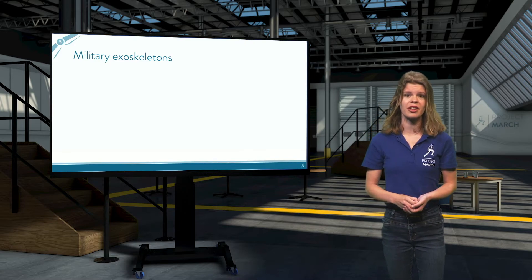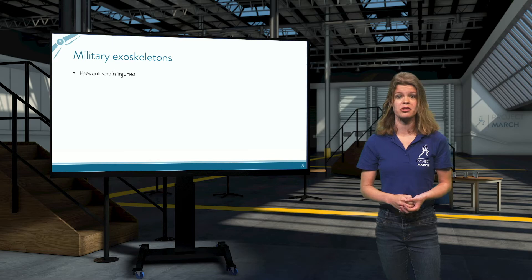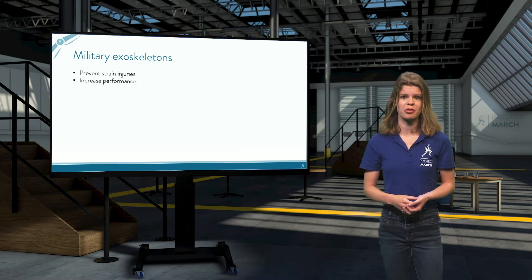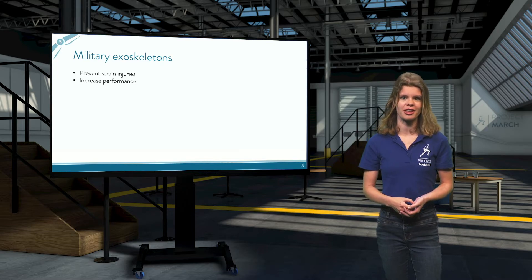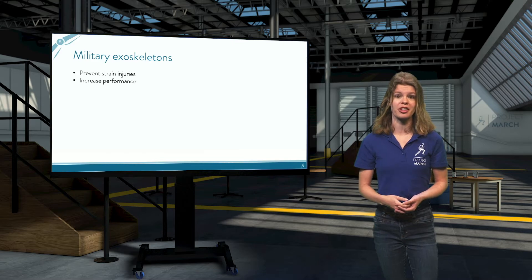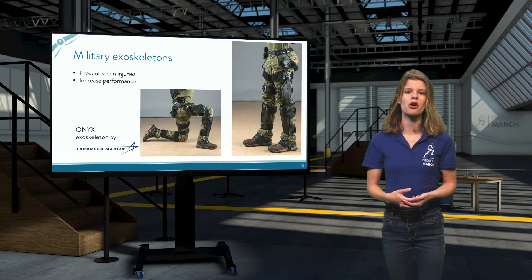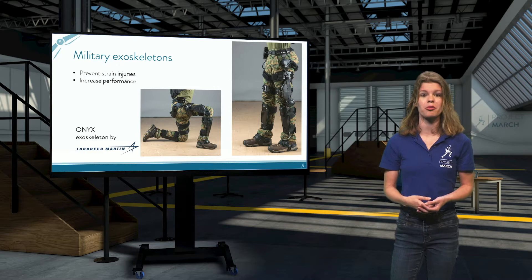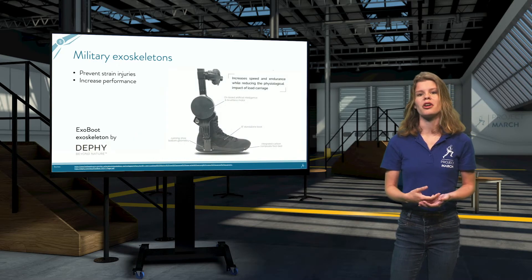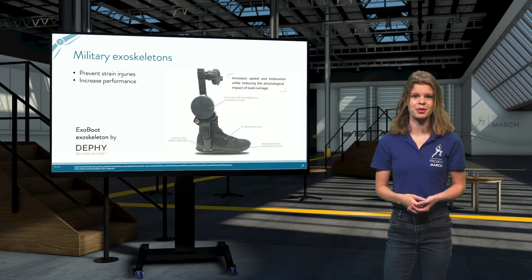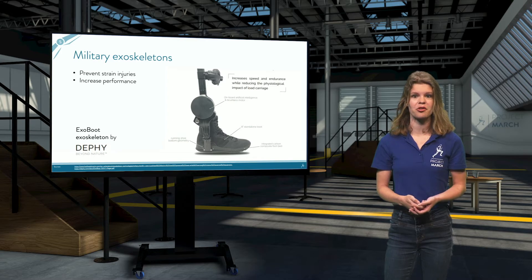The devices help to protect soldiers from strain injuries and allow them to achieve beyond their optimal performance. Here you can see some examples that have been explored by the US Army and were developed with the help of their funding. This is a lower body type of exoskeleton, called OANX, that primarily boosts leg capacity. Another one has a more specific focus on supporting the foot and ankle, called EXOBOOT, and has the advantage of being easier to integrate into any Army operation.